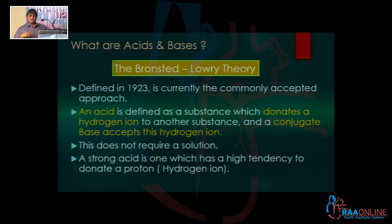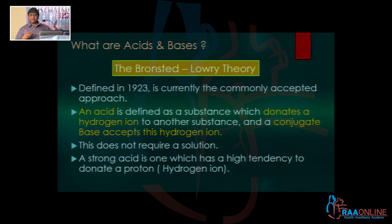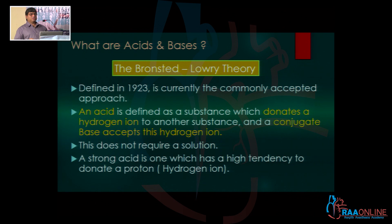They also defined weak acids and strong acids. A strong acid was something that had a strong tendency to donate a hydrogen ion. The more the tendency to donate a hydrogen ion, the stronger the acid was. But if a substance did not have the tendency to donate a hydrogen ion very readily, it was considered to be a weak acid.